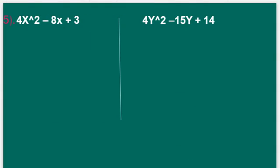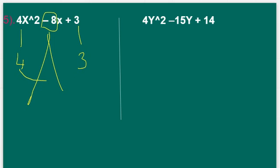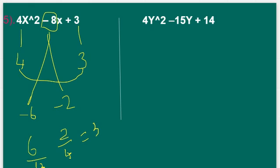Solve one more problem. Here, 4x² − 8x + 3 = 0. The x² coefficient is 4 and the constant value is 3. Split the middle term into two numbers so that their multiplication is 4 × 3 = 12 and addition is −8. That is −6 and −2: −6 + (−2) = −8 and (−6) × (−2) = 12. Change the signs and divide by the coefficient of x², giving x = 3/2, 1/2.